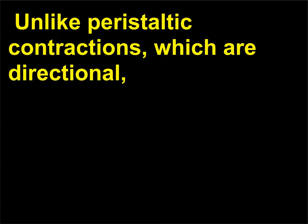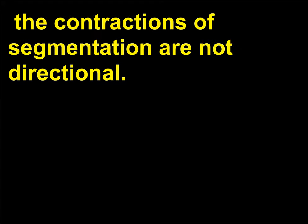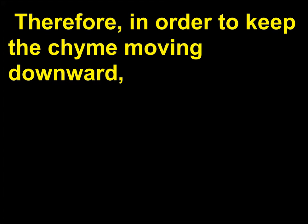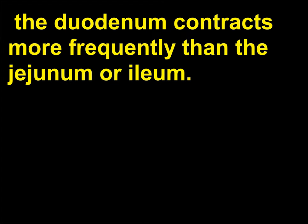Unlike peristaltic contractions, which are directional, the contractions of segmentation are not directional. Therefore, in order to keep the chyme moving downward, the duodenum contracts more frequently than the jejunum or ileum.